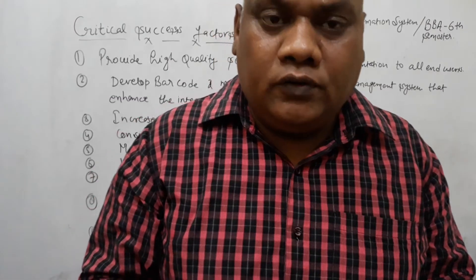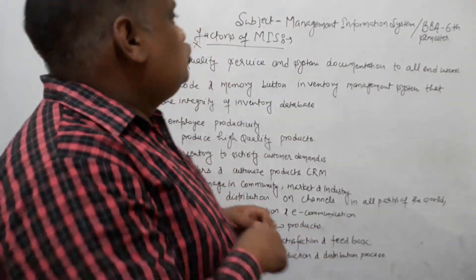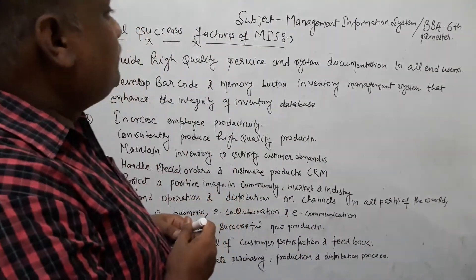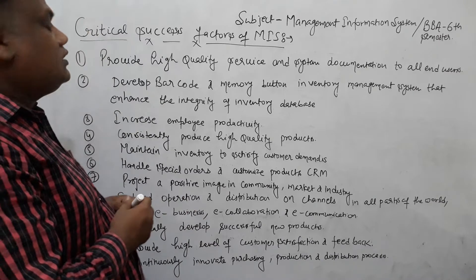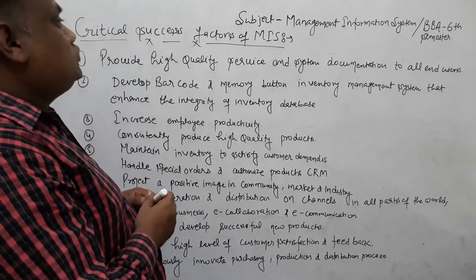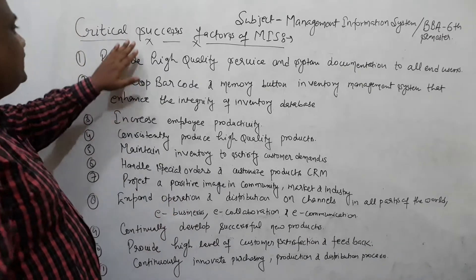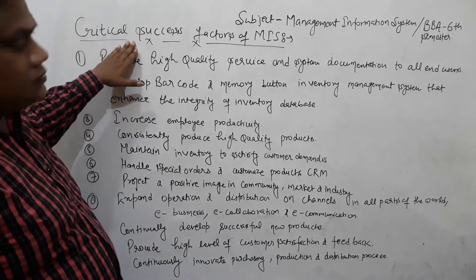Hello students, I hope all of you will be very fine. Today our subject is Management Information System for BBA 6th semester. Today our most important topic is Critical Success Factors of MIS.